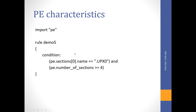In this rule we import the PE library, then in 'demo_five' we check PE sections. Specifically, we check if section index 0 (the first section) has a name equal to 'UPX0', and if the total number of sections is greater than four, then the rule triggers a match. This demonstrates scanning portable executable file structure directly using the PE library.